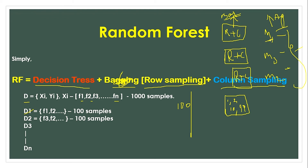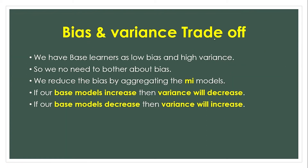The base learners are decision trees with high variance and low bias. This is random forest. Because we start with a low-bias, high-variance model, the aggregation and majority voting reduce the high variance, giving us a better overall model.